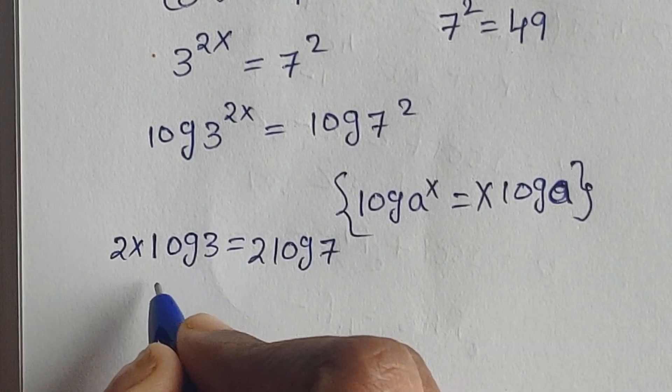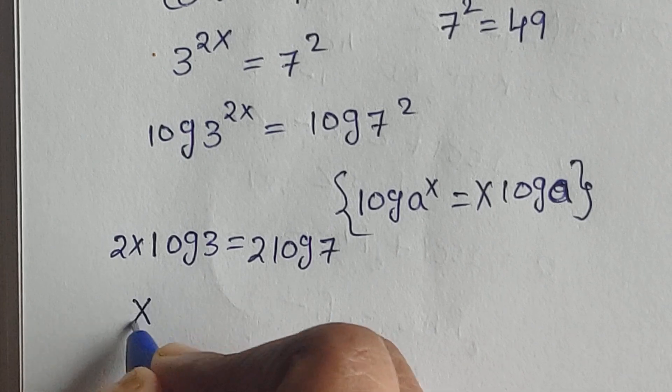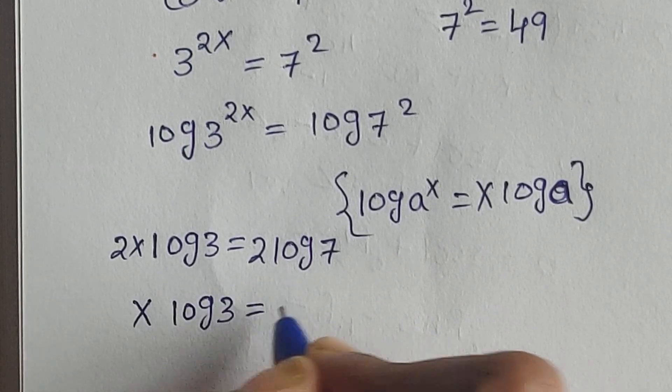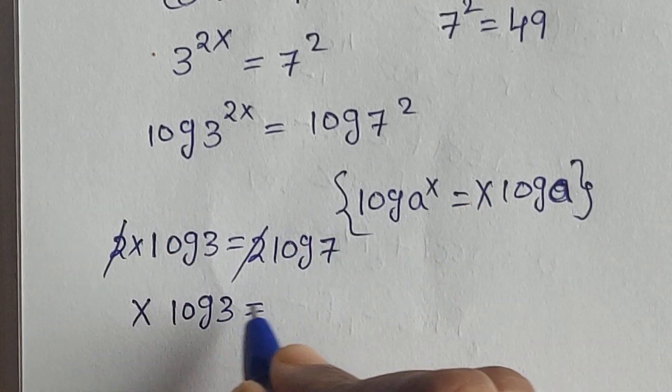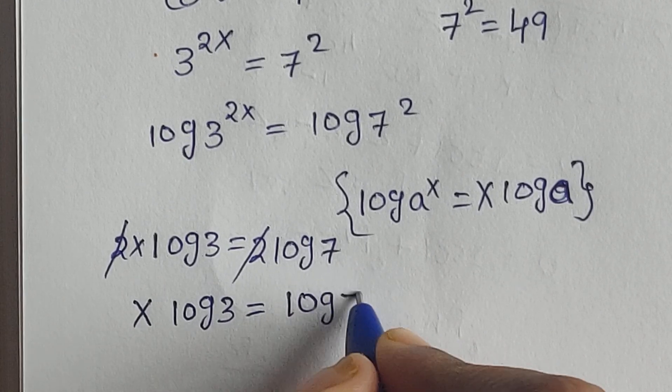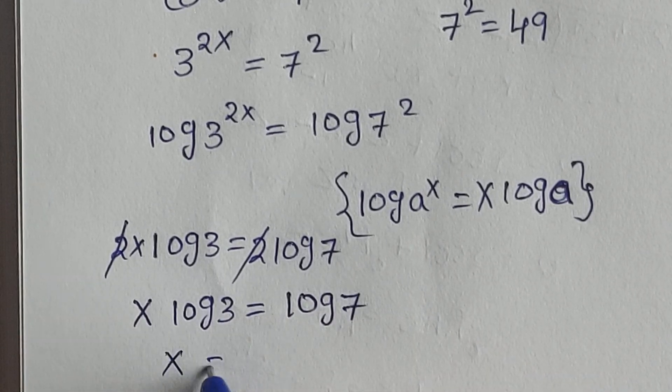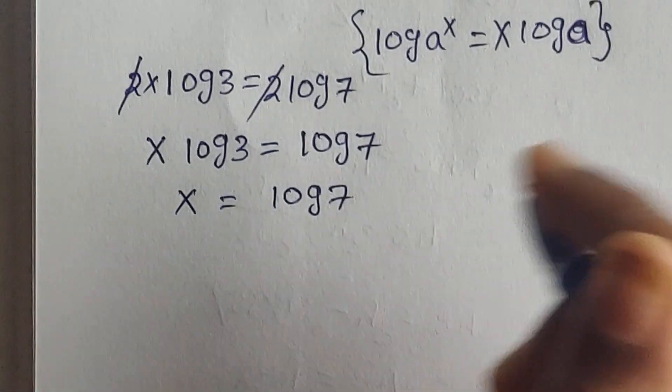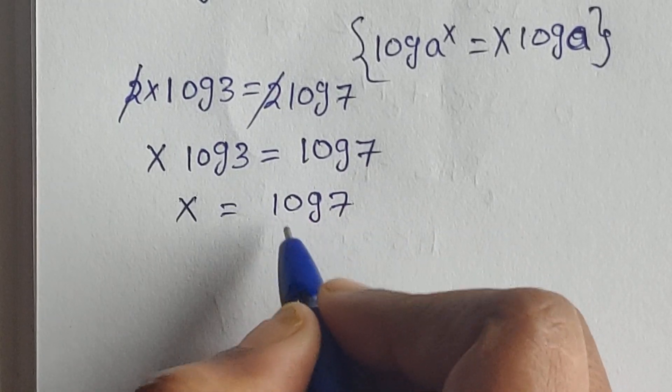So x log 3 equals—here 2 and 2 cancel—log 7. x equals log 7, so log 3 comes down. x equals log 7 over log 3.